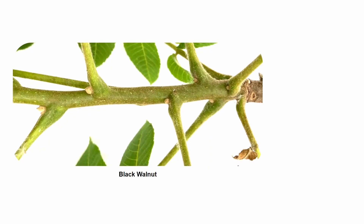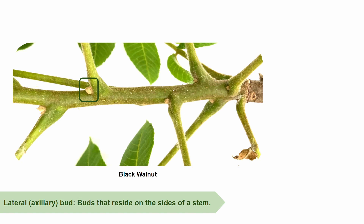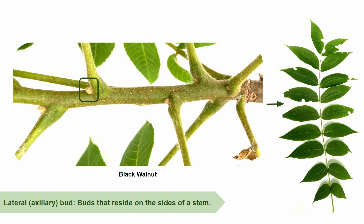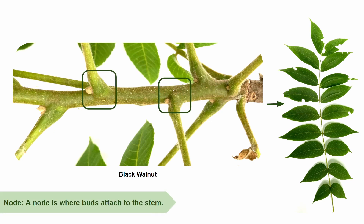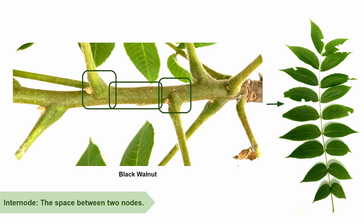A helpful way to determine if you have a simple or a compound leaf is to look for a bud. Here we have a photo of the stem of Juglans nigra, otherwise known as black walnut. In this photo, we can spot multiple lateral or axillary buds, which are buds that reside on the side of a stem. A whole leaf will emerge from a singular bud. If a leaf is compound, all of the leaflets will come from one bud. If you find a lateral bud, look at what is attached to the same node as it. A node is where buds attach to the stem, and the space between two nodes is called the internode. Any leaf attached to the same node will be either simple or compound, depending on what is supposed to come from that bud.